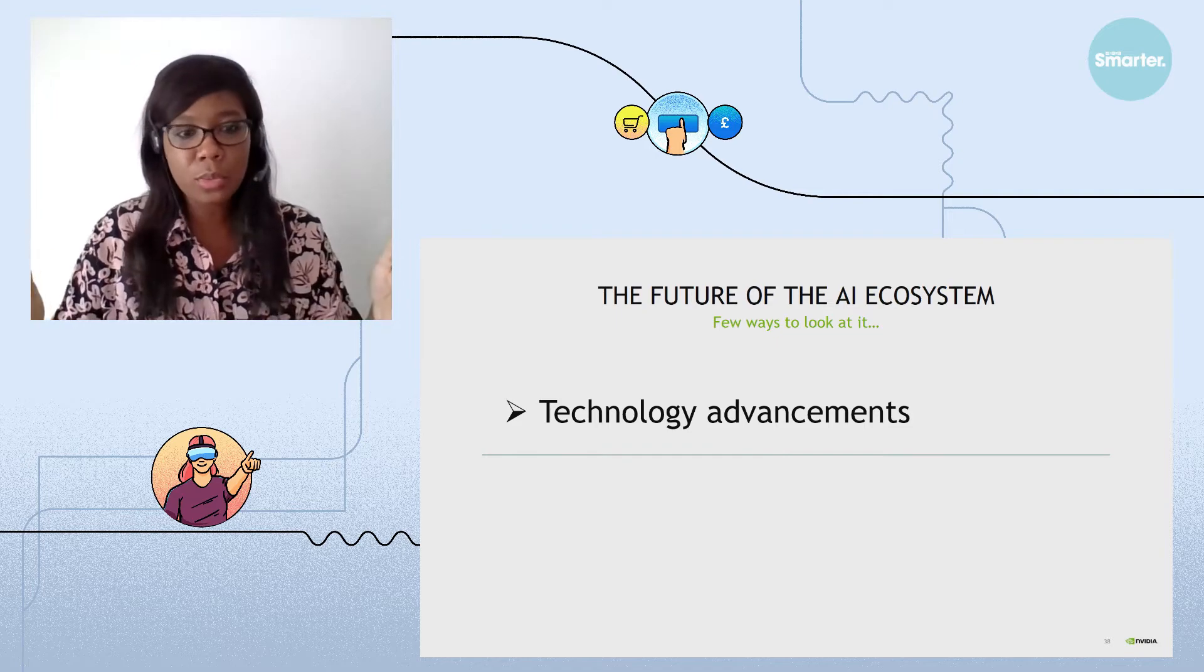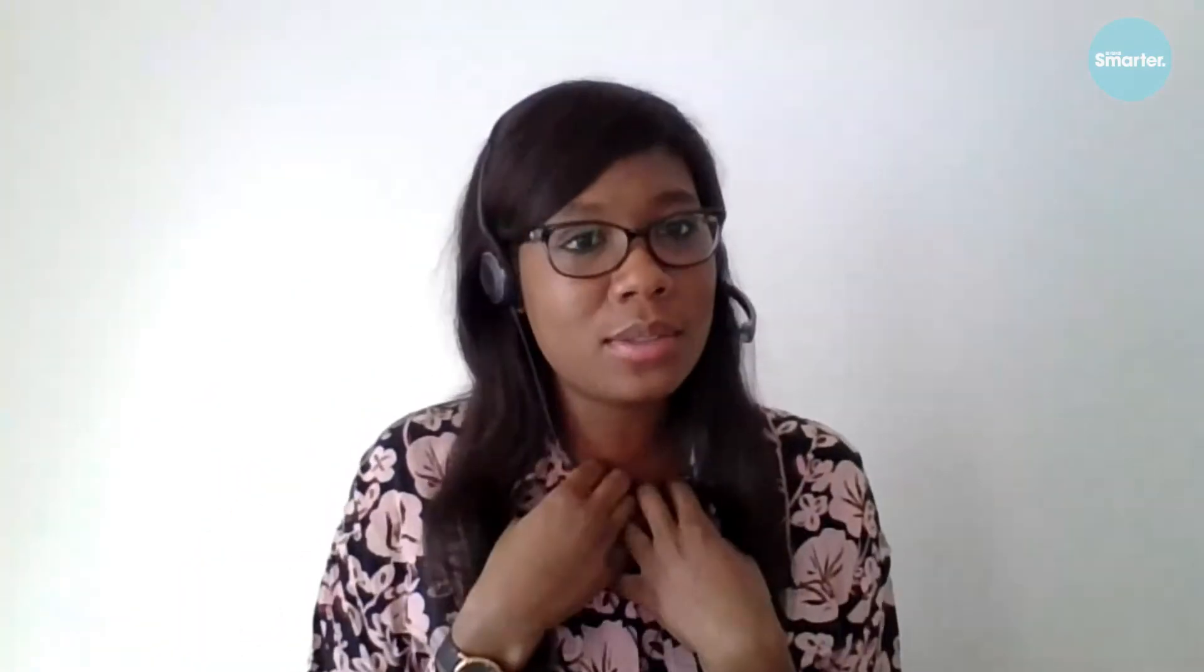For example, in this world where we're all in video conferences, I can be talking in English right now and you could hear me in French with real time translation, for example. Or I can have very low bandwidth for my camera and you can see me in very high quality. So that would be real time super resolution. So the move towards real time is becoming a major trend in AI.